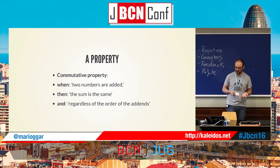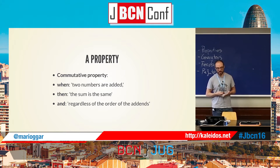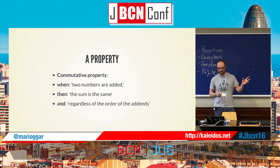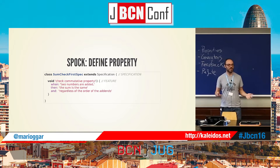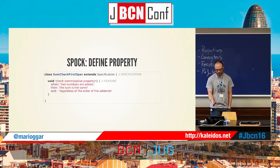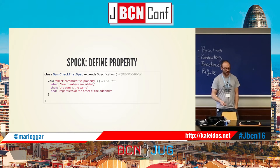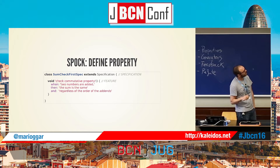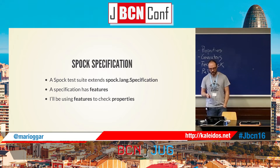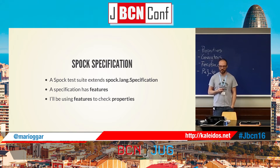Let's pick the commutative property for a sum: when two numbers are added, the sum is the same regardless of the order of the addends. How do we translate this to Spock? I can just write down what I've said. Basically we have a specification which has tests inside called features, and features have a name and then the implementation of the test.